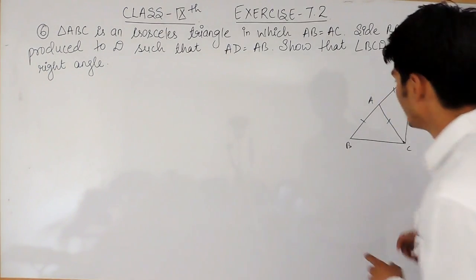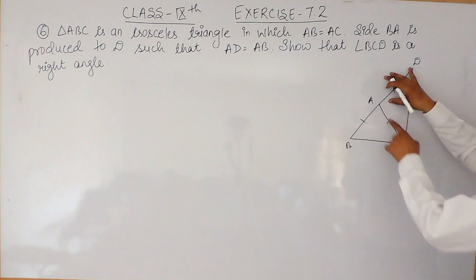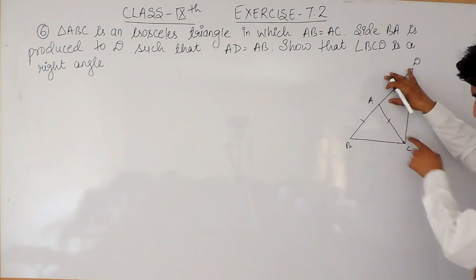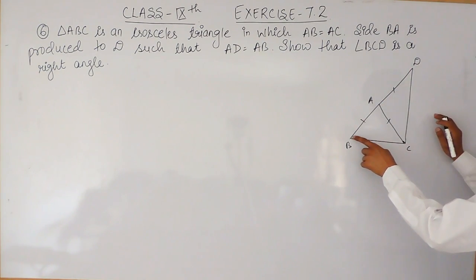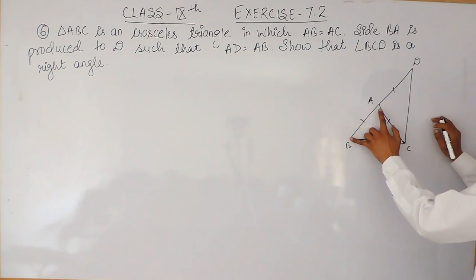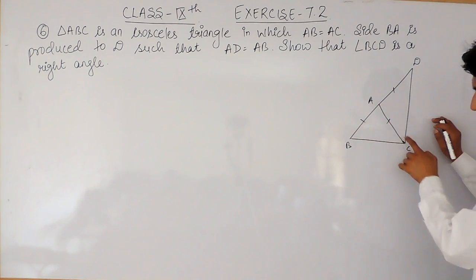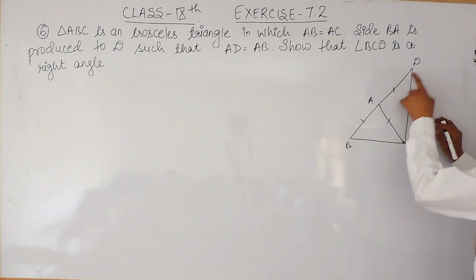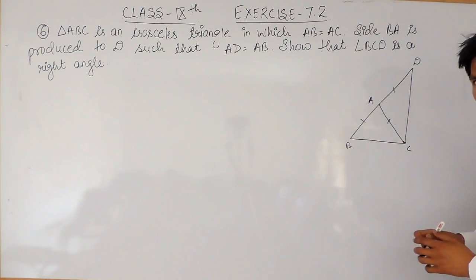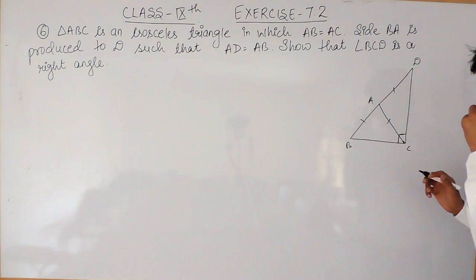It is given that triangle ABC is an isosceles triangle in which AB equals AC. We have produced BA such that AD equals AB. So this side is equal to this, and this is equal to this, and therefore this and this must also be equal. We have to prove that this angle is 90 degrees.